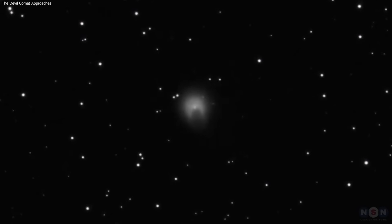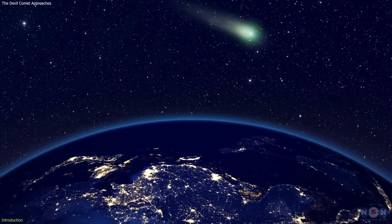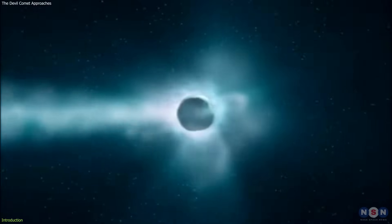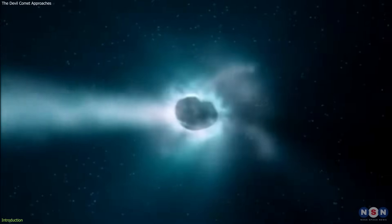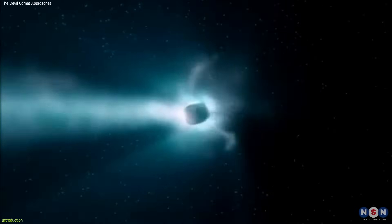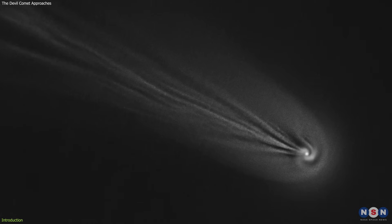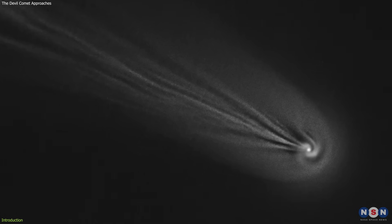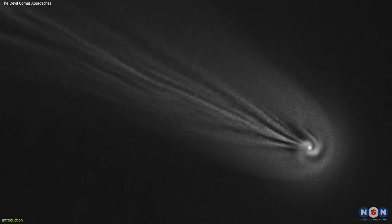The city-sized Devil Comet, destined to sweep past Earth later this year, harbors a mysterious spiral of light encircling its colossal icy core. Recent imagery has unveiled this luminous green vortex, a spectacle that might have gone unnoticed without some ingenious photographic techniques.